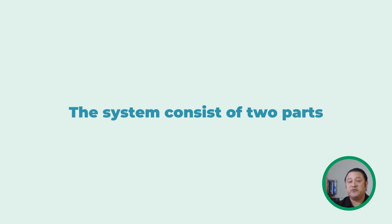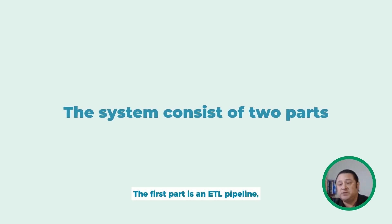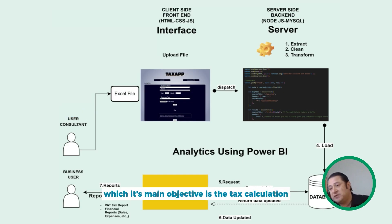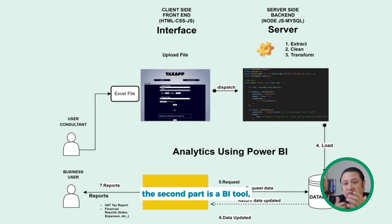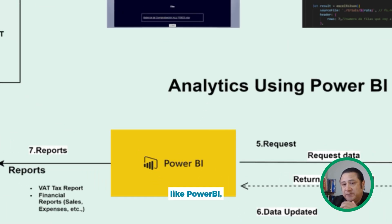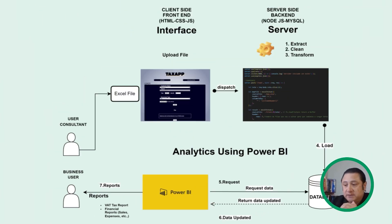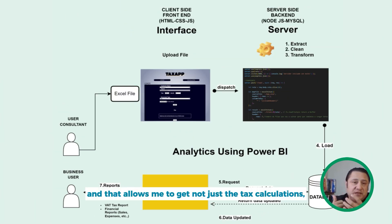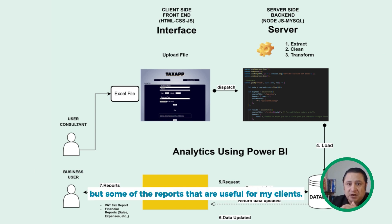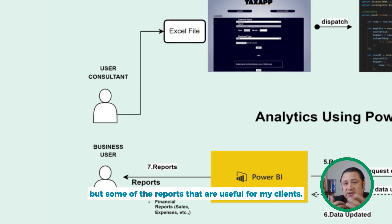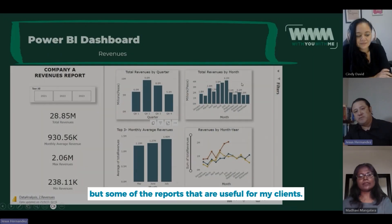The system consists of two parts. The first part is an ETL pipeline, whose main objective is the tax calculation. The second part is a BI tool, like Power BI, and that allows me to get not just the tax calculations, but some other reports that are useful for my clients.